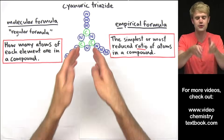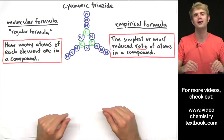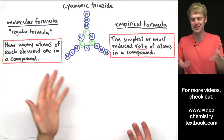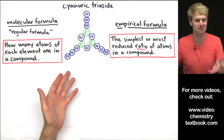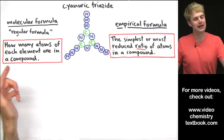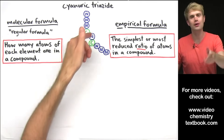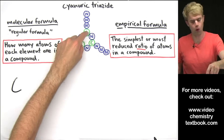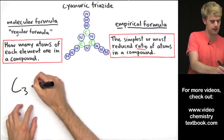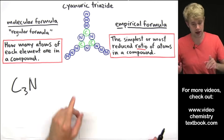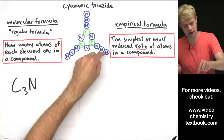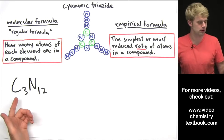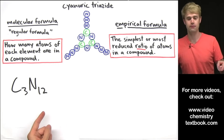Let's look at another. Here's a molecule of the compound cyanuric triazide. I think this molecule has a really cool shape — it looks like something out of Star Trek. So for the molecular formula, how many atoms of each element do we have? We've got carbon: 1, 2, 3 — so C3 — and then nitrogen: 1 through 12 — N12. That is our molecular formula: C3N12.